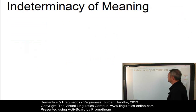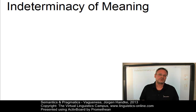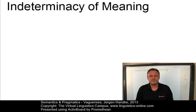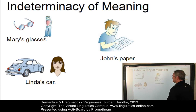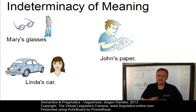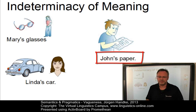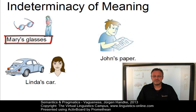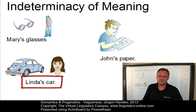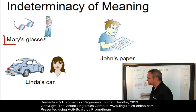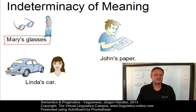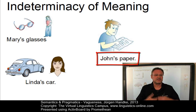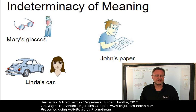The second case is indeterminacy of meaning. This type of vagueness involves lexical items and constructions where the meaning itself does not seem to be clearly expressed — it is indeterminate. A good example is the possessive construction in English. 'John's paper' can mean the paper John wrote, or the paper John has to read. 'Linda's car' can mean the car Linda owns, or the car she uses every Monday. 'Mary's glasses' can mean the glasses Mary needs, or the glasses she has designed. All these cases are indeterminate as far as their interpretation is concerned.